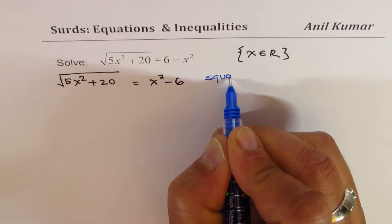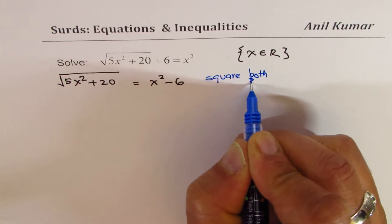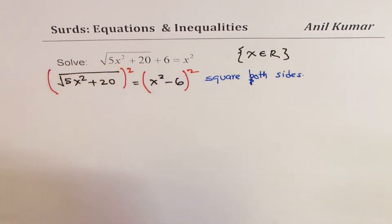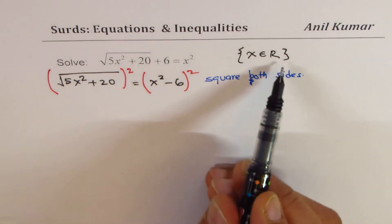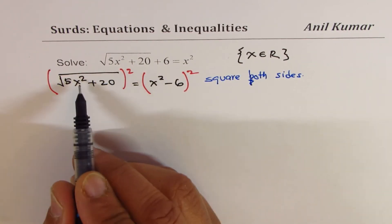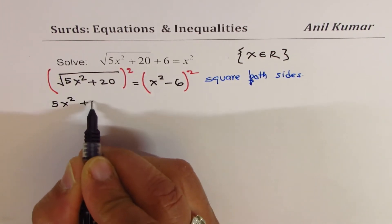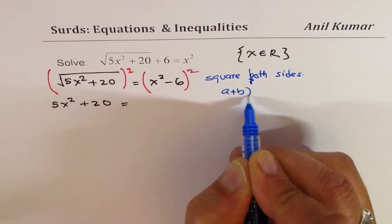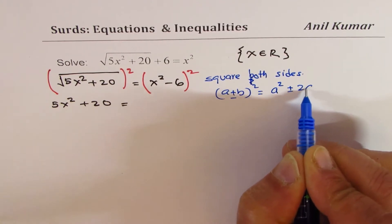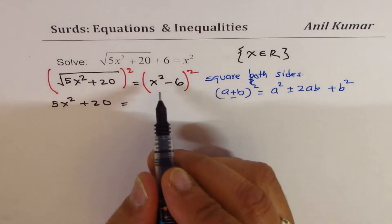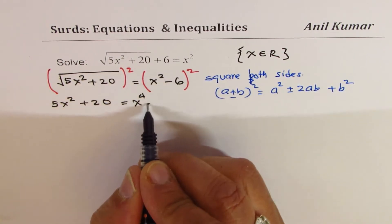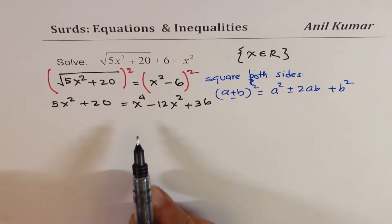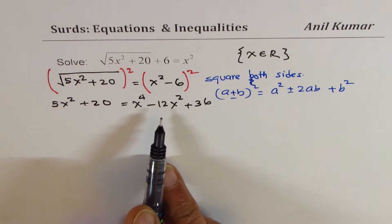We can now square both sides. When you square the square root, you get 5x² + 20 on the left. On the right side, expanding (x² − 6)² using the formula (a − b)², we get x⁴ − 12x² + 36. Since you are preparing for O level, these steps should be straightforward to follow.